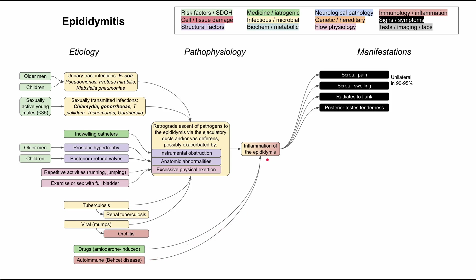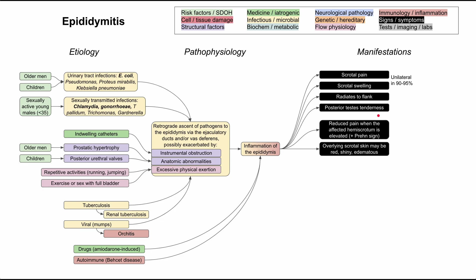The most prominent symptoms are scrotal pain and scrotal swelling, which is usually unilateral — 90 to 95% of cases are unilateral, though about one in ten can be bilateral. This pain typically radiates to the flank on the same side. The patient will have posterior testes tenderness, as the epididymis sits right behind the testicle and will be tender. On physical exam, you might also see the overlying scrotal skin to be red, shiny, or edematous.